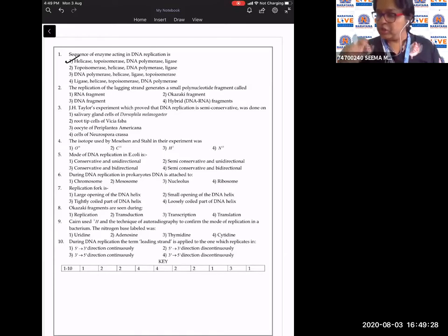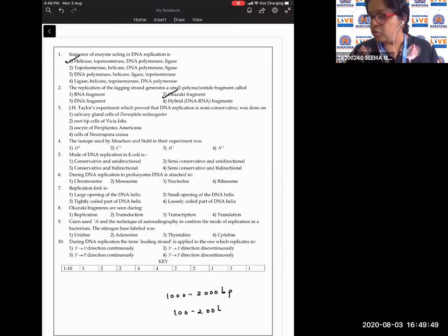The replication of the lagging strand generates small polynucleotide fragments which are called Okazaki fragments, which is named after the scientist. And the length of these Okazaki fragments are 1000 to 2000 base pairs in prokaryotes and around 100 to 200 base pairs in eukaryotes.